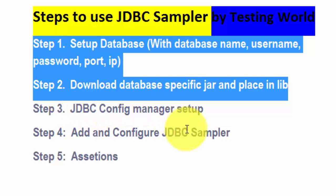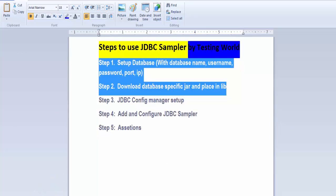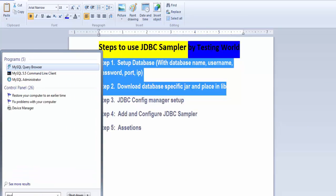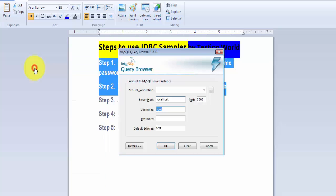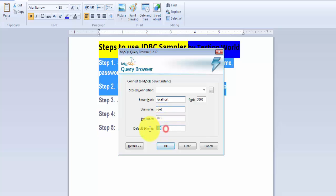First of all, I have a database - I'm going to show you. I have MySQL as a database, installed on my local machine. I'm going to the MySQL Query Browser. The database is on my local machine, the port number is 3306, and I'll show you the username, password, and database name.